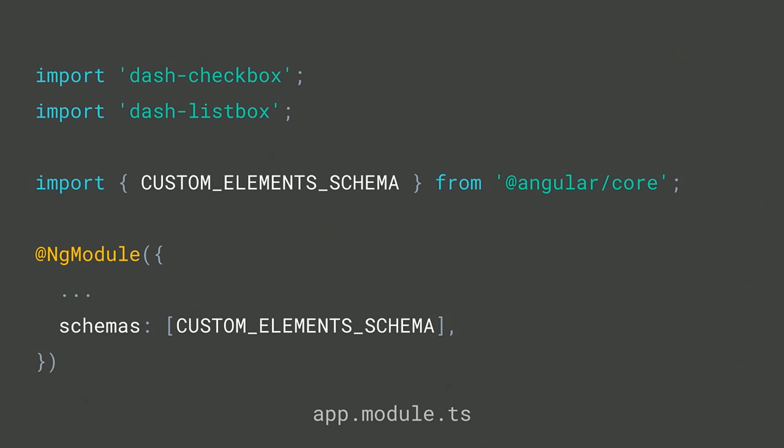To add web components directly to the Angular project, I'll do two things in app.module. First, import those web components in their ES5 or ES2015 version. Then I'll let Angular know I'm using web components by importing CUSTOM_ELEMENTS_SCHEMA and supplying it as a schema on my root app module. Normally Angular validates every HTML tag used in templates — adding this schema turns off that validation so we can add any generic web component without throwing errors.